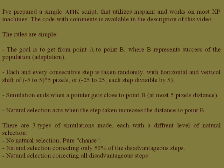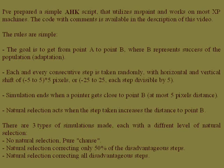Natural selection acts when a step taken increases the distance to point B. There are three types of simulations made, each with a different level of natural selection: no natural selection (pure chance); natural selection correcting only 50% of the disadvantageous steps; and natural selection correcting all disadvantageous steps.